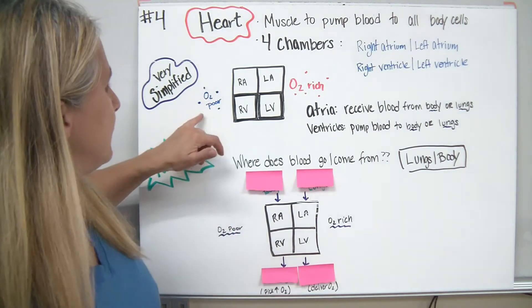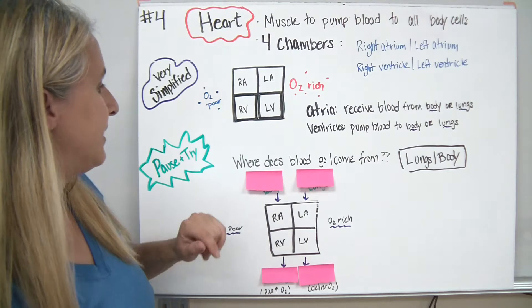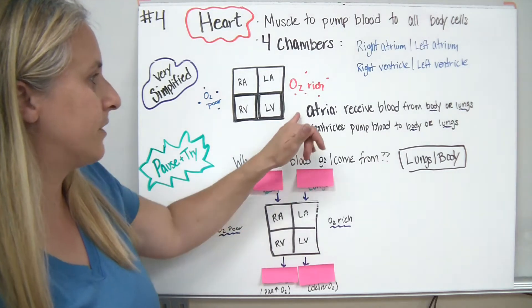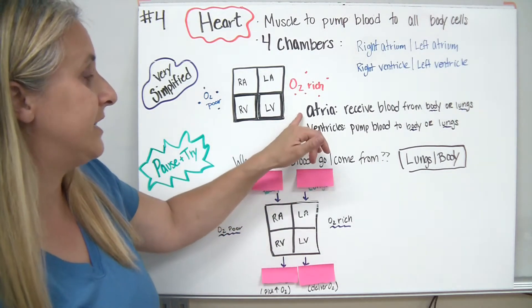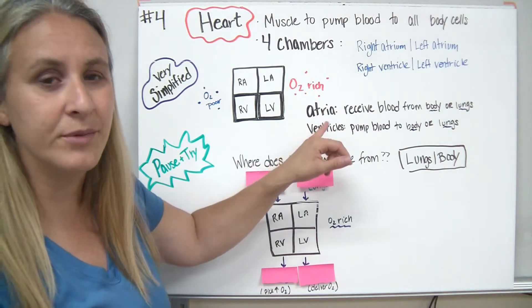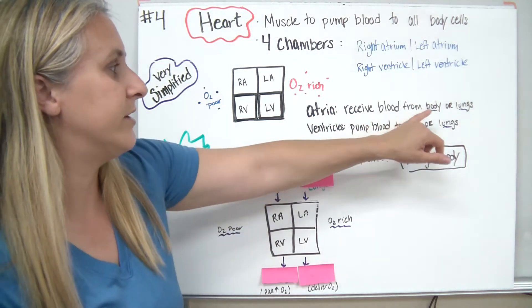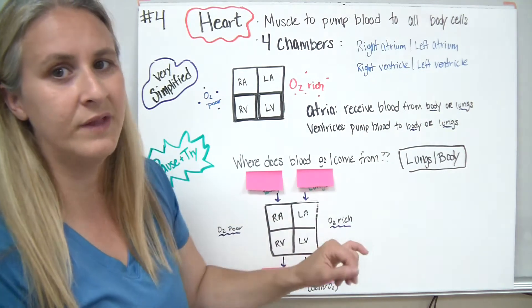We're going to label which sides we think are oxygen-rich and oxygen-poor in just a minute, but remember a couple of things. The atria are the upper chambers, and they receive blood from either the body or the lungs.